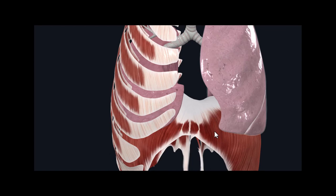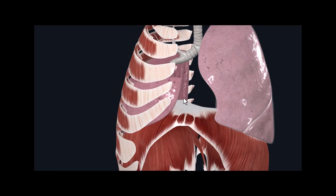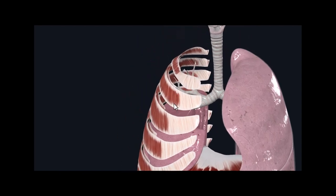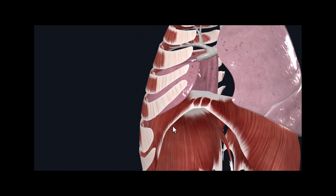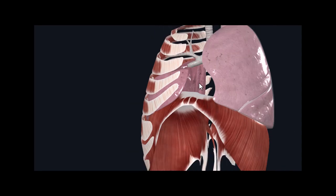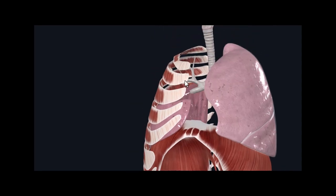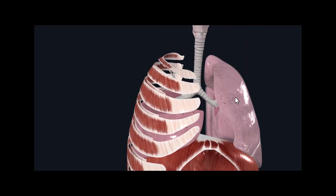The diaphragm will contract, and this contraction will push the lungs away from each other so they will be allowed to fill. When we breathe in, the diaphragm contracts, and these intercostal muscles attached to the ribs will expand outwards, flattening right there. The intercostal muscles will expand outwards, and this allows the lungs to expand to their maximum potential.